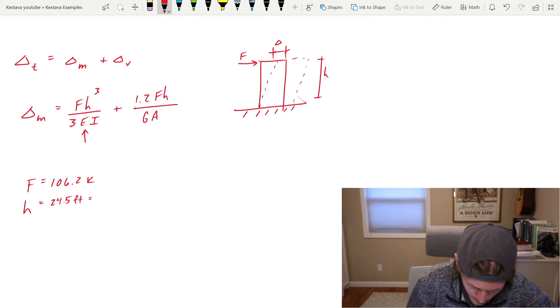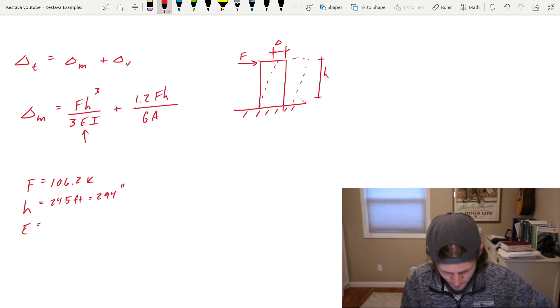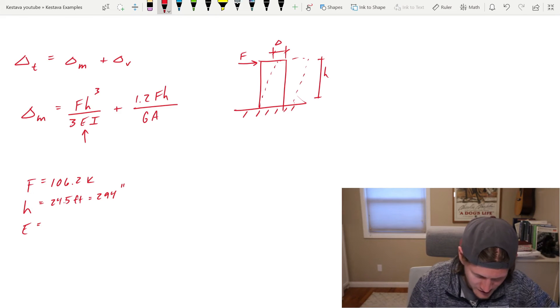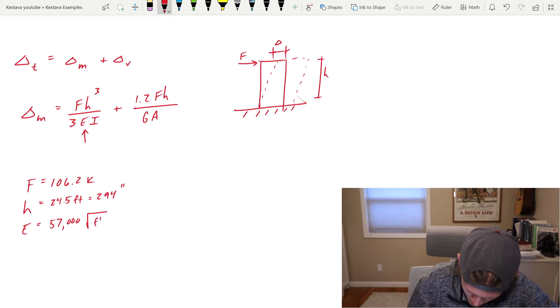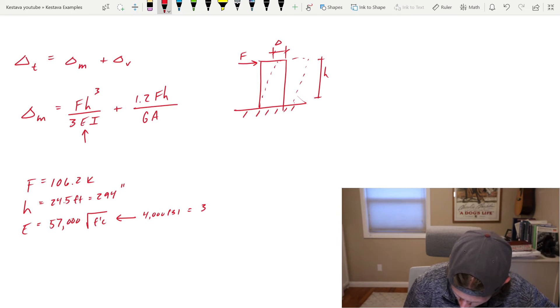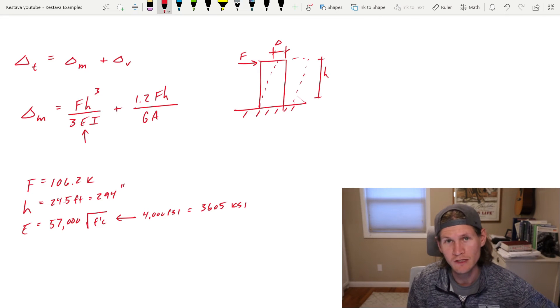But F is 106.2 kips. H is your height, which is equal to 24.5 feet from the previous examples. That equates to, we're going to pull it into inches, keep it consistent with our equations, 294 inches. E, Young's modulus, is equal to, for concrete, and you can find this in your ACI, but is equal to 57,000 square root of F prime C. For our problem, we are going to take pretty typical concrete as to 4,000 psi. And that, once you crunch numbers, gets you 3605 ksi. So make sure that you plug in psi underneath the square root symbol. You can't change it to four and then do it. It scrambles the equation. So just watch yourself on that.